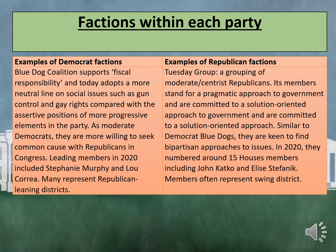Let's look at some examples of factions within parties, starting with the Democrat Blue Dog Coalition. The Blue Dog Coalition supports fiscal responsibility and adopts a more neutral line on social issues such as gun control and gay rights, compared with the assertive positions of more progressive elements in the party. As moderate Democrats, they are more willing to seek common cause with Republicans in Congress. Leading members in 2020 include Stephanie Murphy. Many represent Republican-leaning districts.